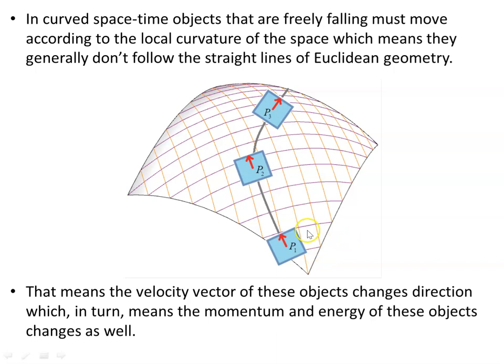You can imagine here is this curved two-dimensional surface, and an object moving across it. You can see that its velocity vector at each point points in a different direction as it follows the curvature of space. It has no choice — the velocity vector of the object changes direction, so it can't be travelling with a constant velocity. Its direction changes, and that means the momentum and energy of these objects changes as well.